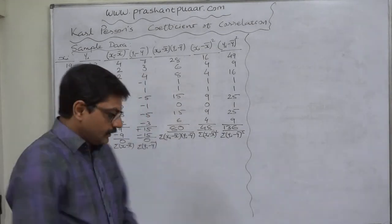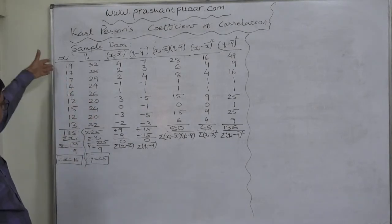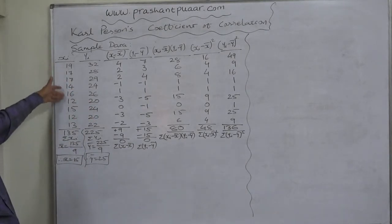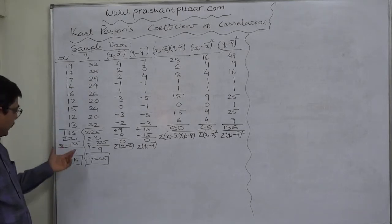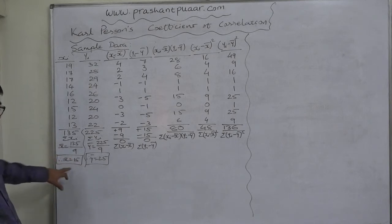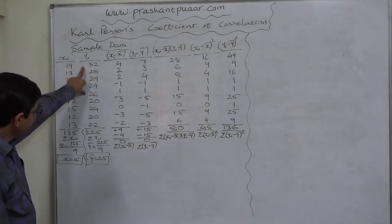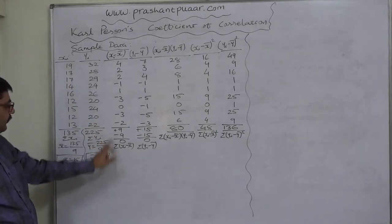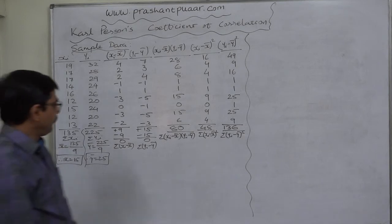We have a sample data of X and Y. X takes the values 19, 17, 17, 14, 16, 12, 15, 12, and 13. The summation is 135, and 135 divided by 9 gives us X-bar = 15. Similarly for variable Y, the summation is 225 and Y-bar is 25.